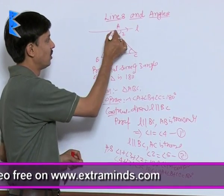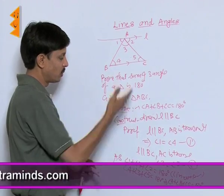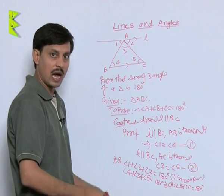Hence, the property that sum of 3 angles of a triangle is 180 degrees is proved here with a very simple easy approach.